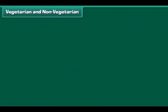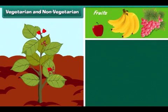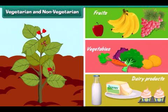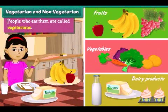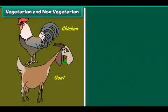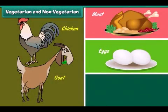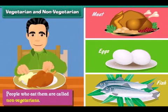Plant products like fruits, vegetables and dairy products are vegetarian food. People who eat them are called vegetarians. Animal products like meat, eggs and fish are non-vegetarian food. People who eat them are called non-vegetarians.